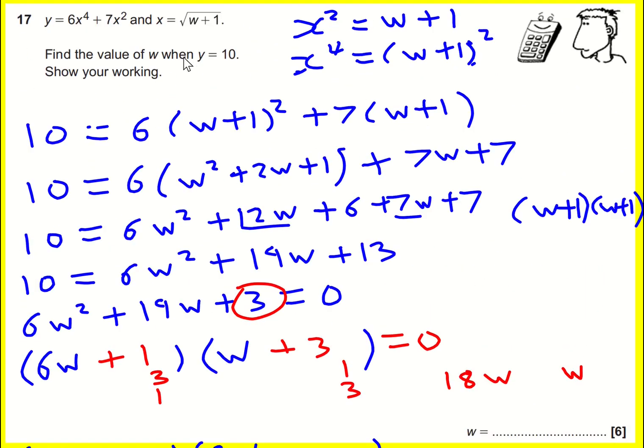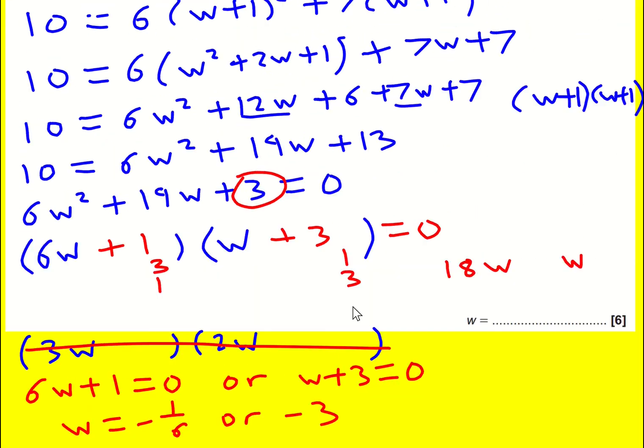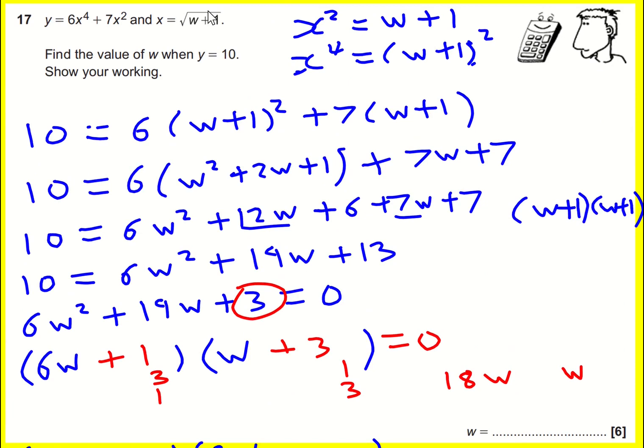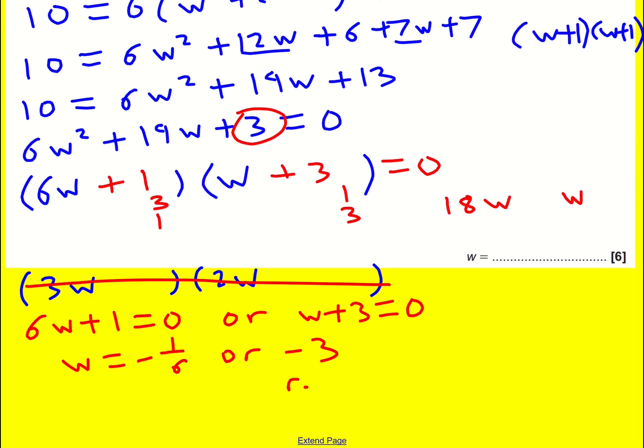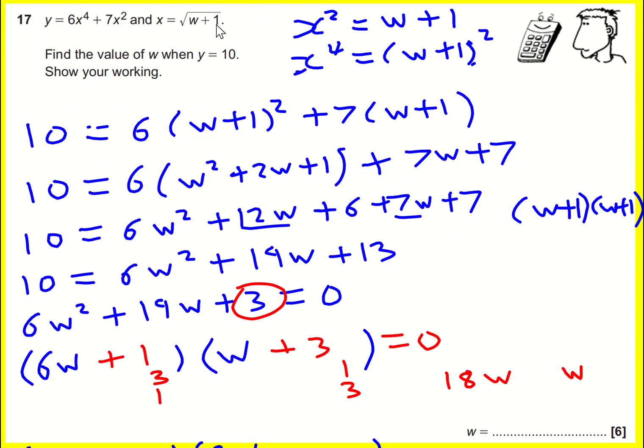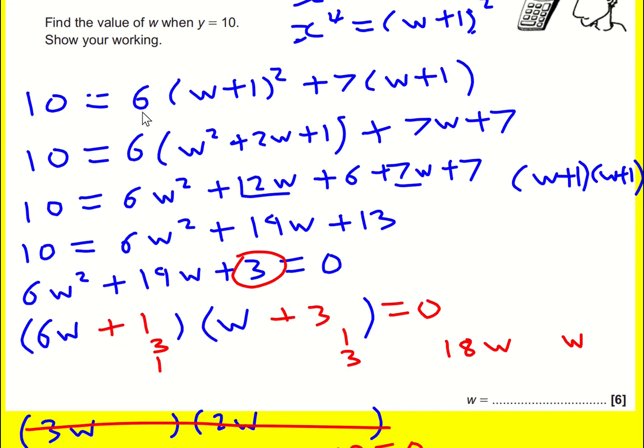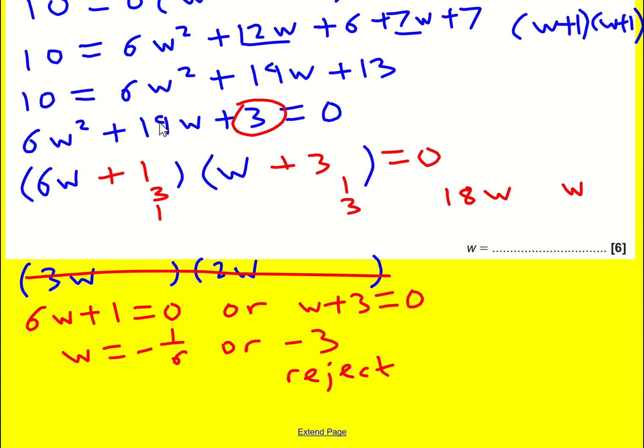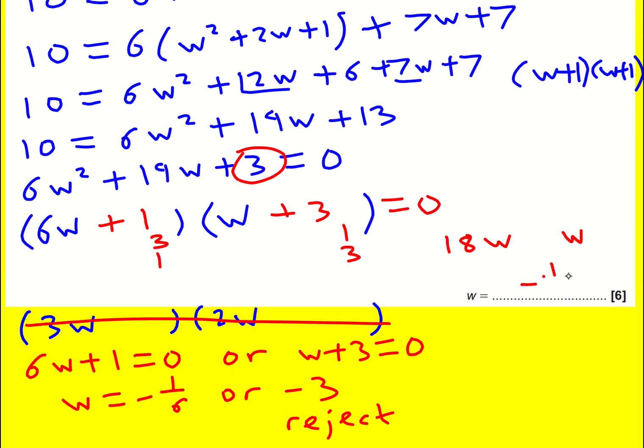We need to remember, right at the start, we had y is equal to 6x to the 4 plus 7x squared. Now there's an issue if this thing in the square root is negative. And when w is equal to minus 3, I will actually get a negative here. So I need to reject w is equal to minus 3. This is an extra bit they put in right at the end. You have to realize that, because I can't have the square root of minus 3 plus 1. That would be the square root of minus 2. And we're ruling that out here. So in fact, w is just equal to minus 1 sixth.